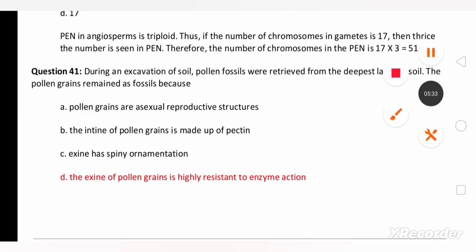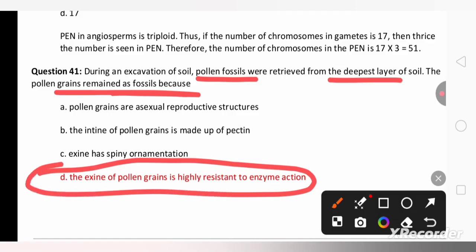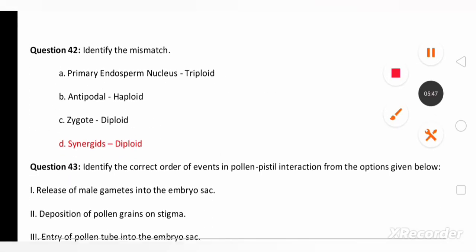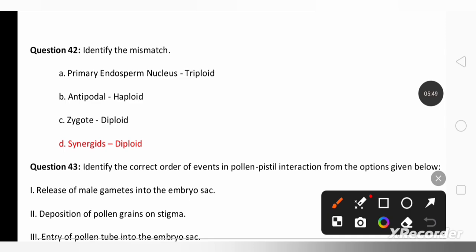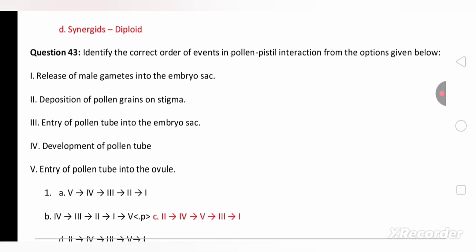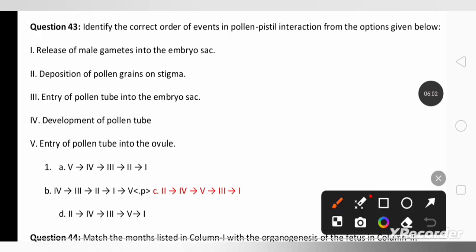During the excavation of soil pollen fossils were retrieved from the deepest layer of the soil. This pollen grain remains as a fossil because of the presence of sporopollenin that is present in exine. Identify the mismatch one: synergids are diploid. No, synergids are haploid. So that is the mismatch one.